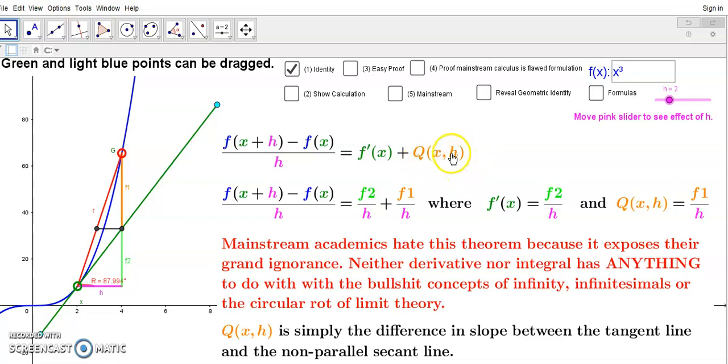And all the terms that contain h are part of this slope difference. It's a difference in slopes, a difference between the slope of the non-parallel secant line and the derivative. And I explained all this to you in a previous video.